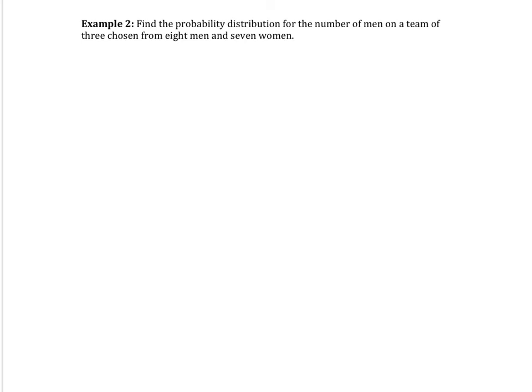So how many choices do we have in total? That's our N. That's the easiest one to find. 15, right? We just want to add up the eight men and seven women. And what are we looking for? What's success? Number of men. So A would be eight.